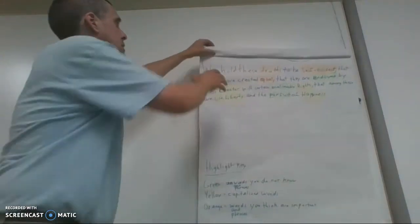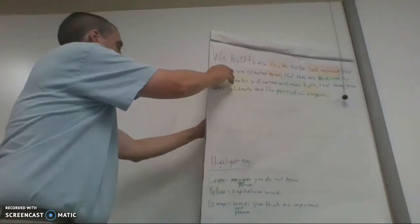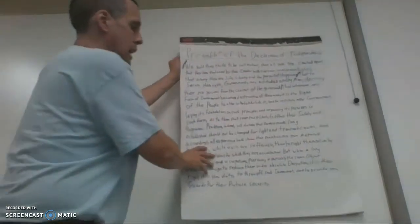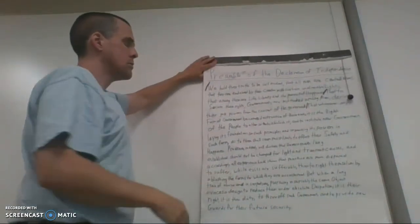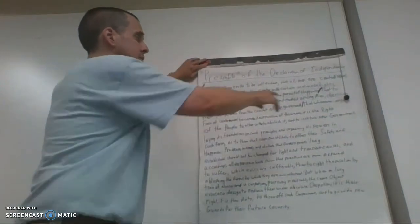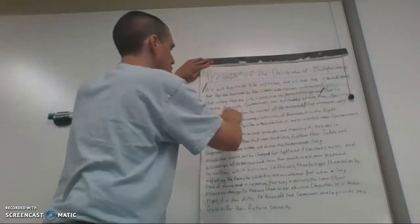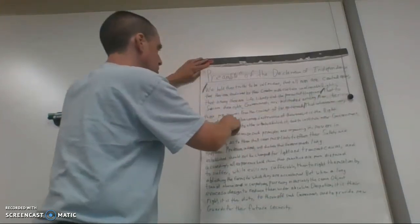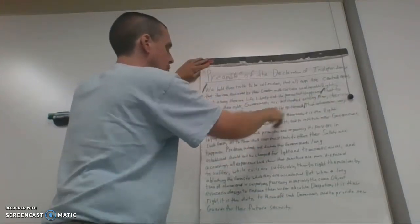So now that you've seen me do this, we're going to go back to that first part and we're going to do this one together. So we're going to look at, what's our next chunk? Good. So the second sentence, that to secure these rights, governments are instituted among men deriving their just powers from the consent of the governed.